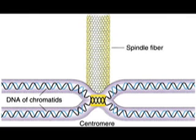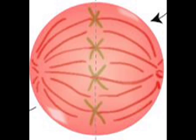The spindle fibers attach themselves to the middle of each chromosome at the centromere. The centromere provides a sturdy attachment point among the fragile DNA. Here is another depiction of metaphase.